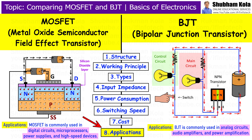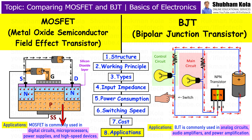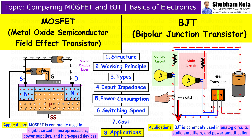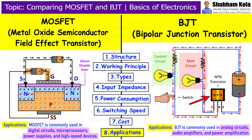Next is applications. MOSFET is widely used in digital circuits, microprocessors, computers, and switching power supplies. Due to its high-speed switching capabilities and low power consumption, MOSFETs are the choice for high-efficiency and high-speed applications in modern electronics. On the other hand, BJTs are commonly used in analog circuits and audio amplification. BJTs are known for their high current gain, making them suitable for amplifying signals in audio systems and other analog circuits.